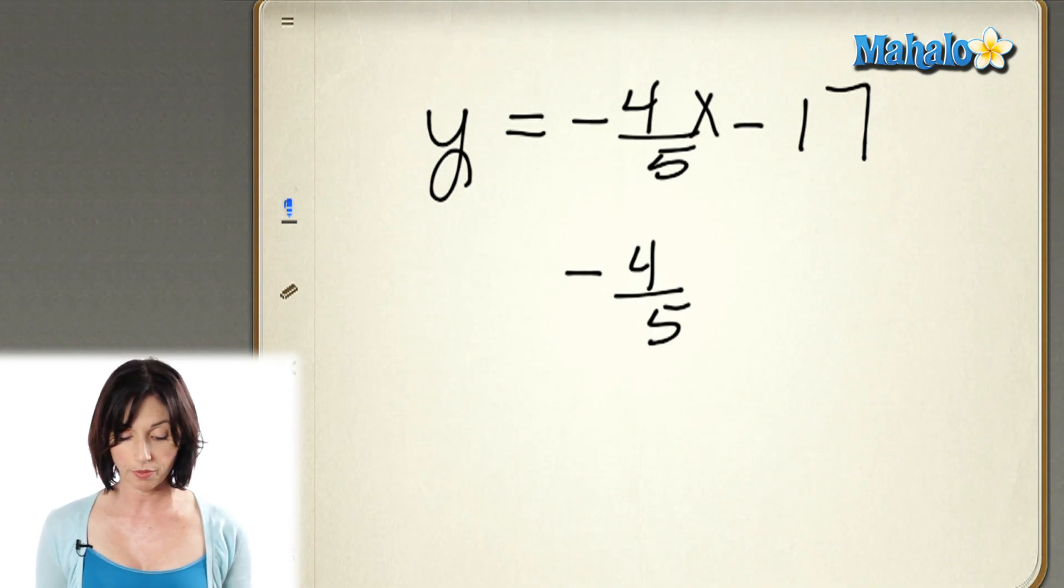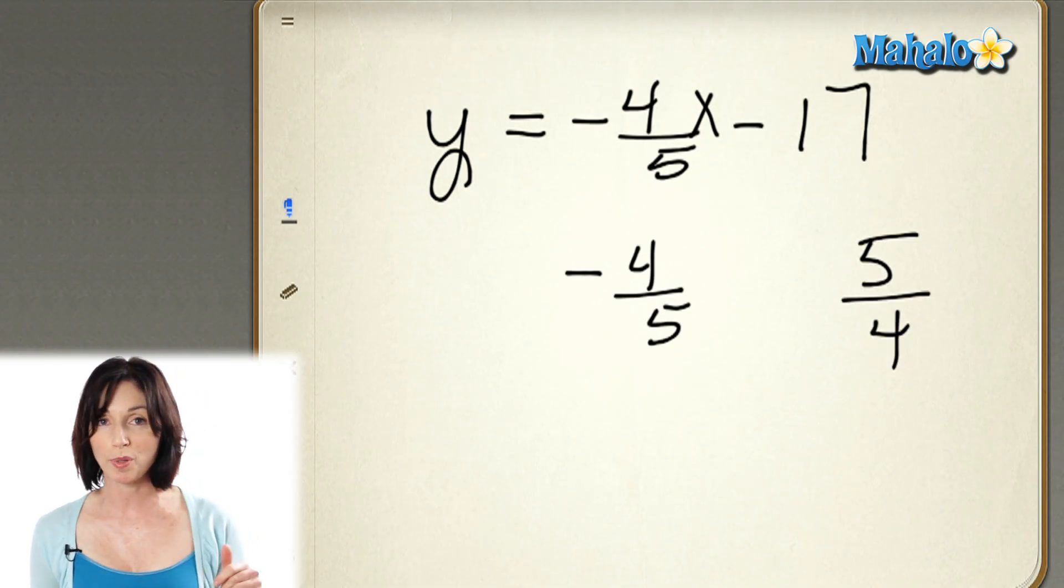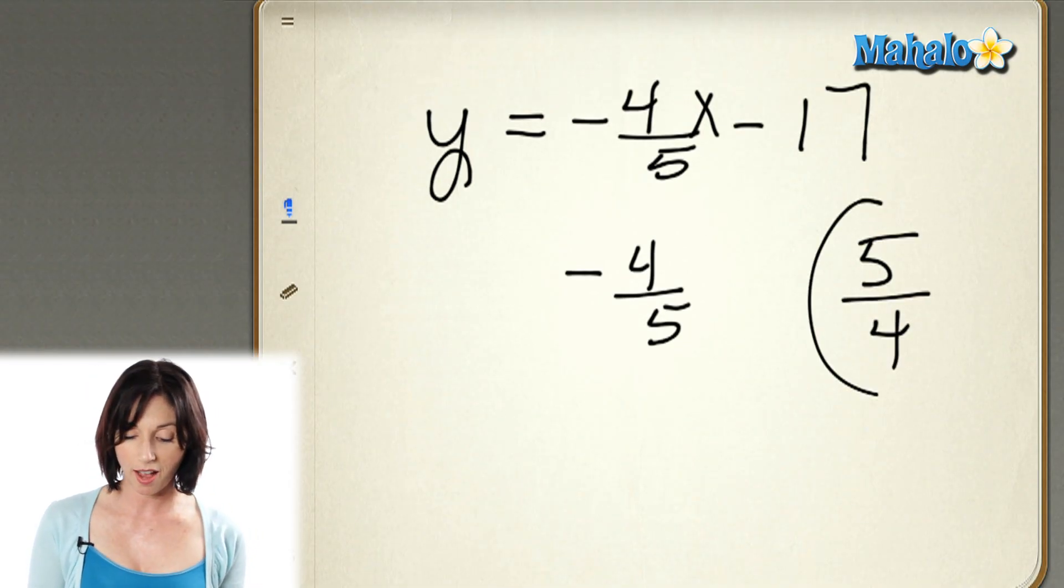It's negative, so I'm going to make it positive. And instead of 4/5, I'm going to have 5/4. So, the slope of a line that is perpendicular to this line is 5/4.